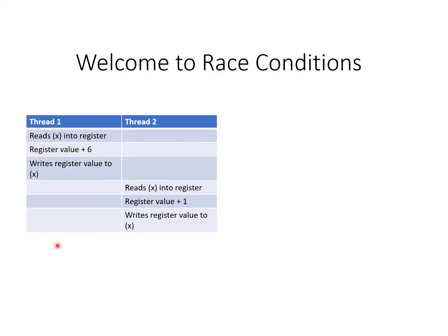In this case, we see that the two threads don't interleave — they're completely independent and non-overlapping in this particular execution scenario. Thread one reads x into a register, adds six, and writes it back. So we now have x plus six. Thread two then sees the updated version, reads it into the register, adds one, writes back, and everything is wonderful.